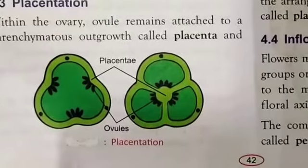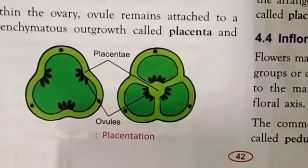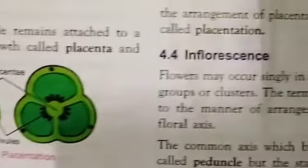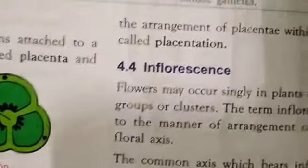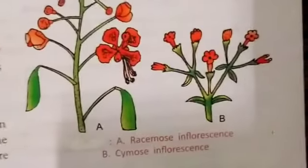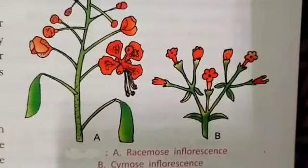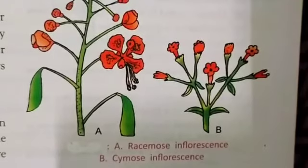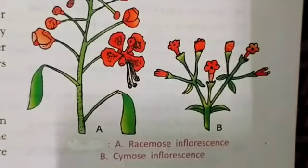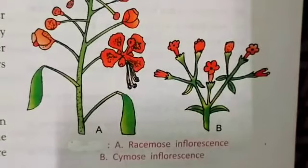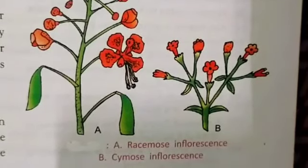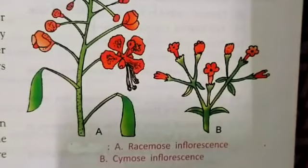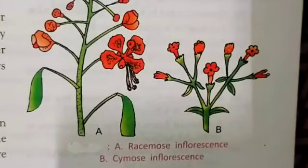Now there is another important term: inflorescence. Inflorescence is of two types — racemose and cymose. Inflorescence means the manner or arrangement of flowers on a floral axis.